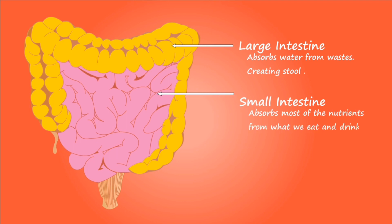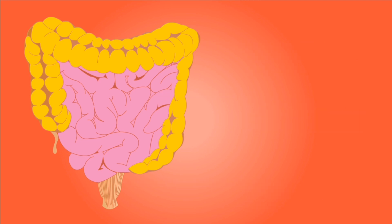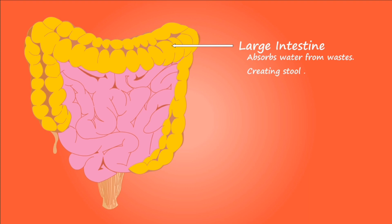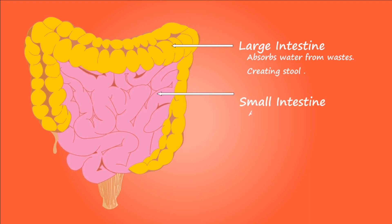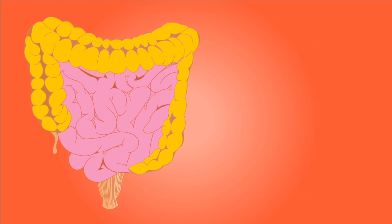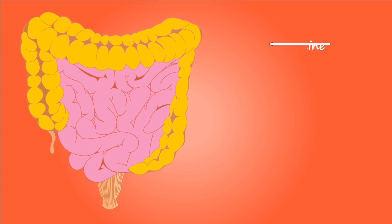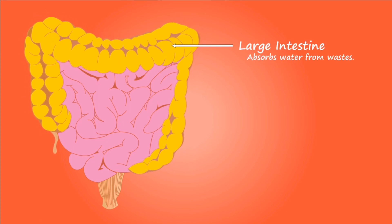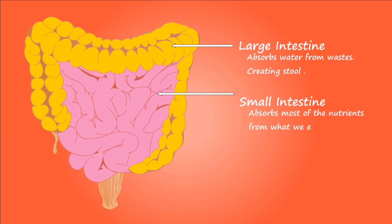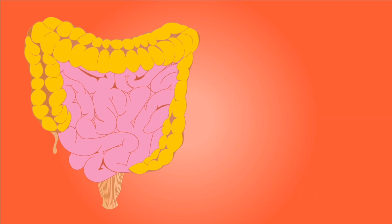The large intestine is larger in diameter than the small intestine. It begins at the ileocecal junction, where the ileum enters the large intestine, and ends at the anus. The large intestine consists of the colon, rectum and anal canal. The wall of the large intestine has the same types of tissue that are found in other parts of the digestive tract, but there are some distinguishing characteristics.